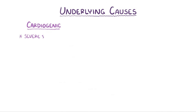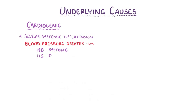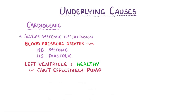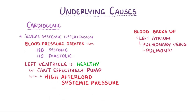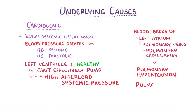Another cardiogenic cause is severe systemic hypertension, specifically a blood pressure that's greater than 180 systolic or 110 diastolic. In this situation the left ventricle is healthy, but simply can't effectively pump blood in a system with such a high afterload, in other words under conditions with such high systemic pressures. Once again blood starts to back up into the left atrium, pulmonary veins, and pulmonary capillaries, ultimately leading to pulmonary hypertension and pulmonary edema.